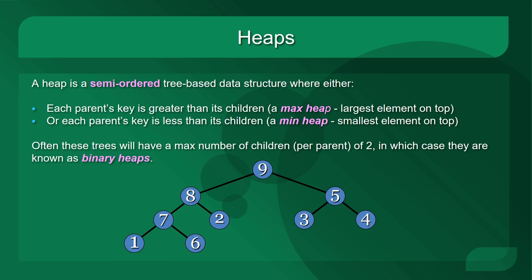A heap is a semi-ordered tree-based data structure where either each parent's key is greater than its children, known as a max heap with the largest element on top, or each parent's key is less than its children, known as a min heap with the smallest element on top. Often these trees have a max number of children per parent of two, in which case they are known as binary heaps. You can have three, four, or even more children, and these are also valid heaps, but we will only be talking about binary heaps in the rest of this lesson.